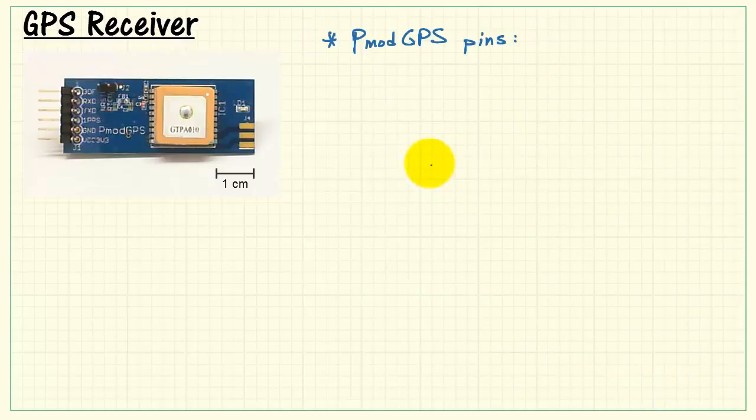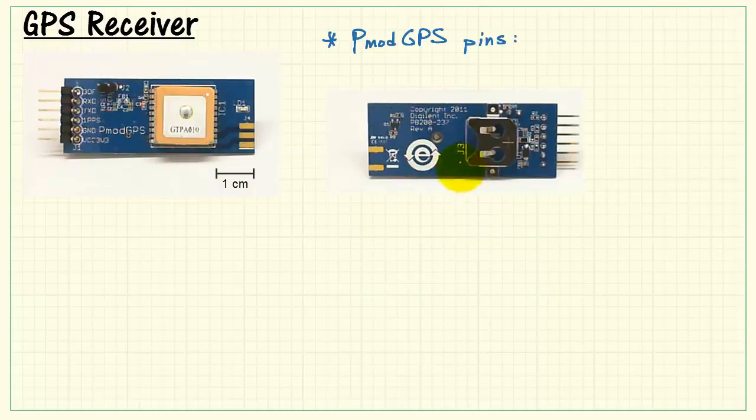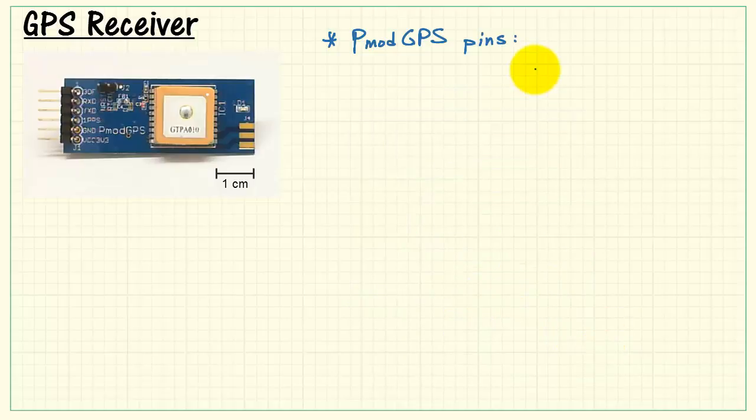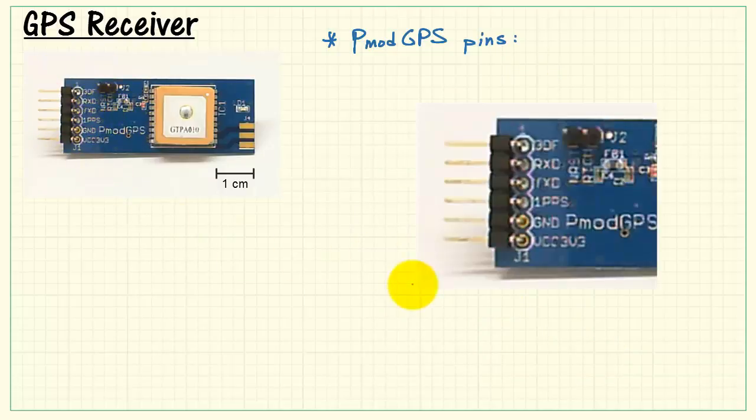Let's take a look at the pins for the PMOD GPS, but before I do that, I want to flip the board to its back side, and we can see the container for a 12.5 millimeter coin cell. That's the one for battery backup. Also wanted to mention that the PMOD GPS in general, when it's active, draws between 24 and 30 milliamps.